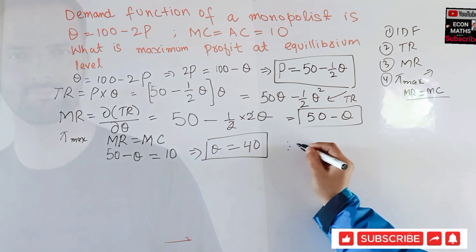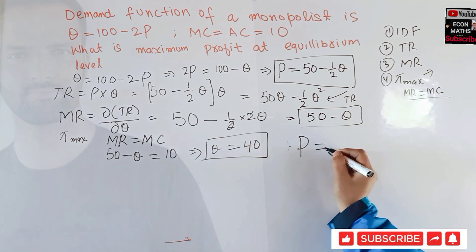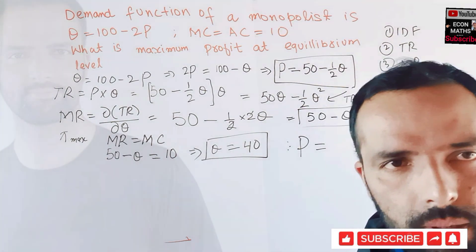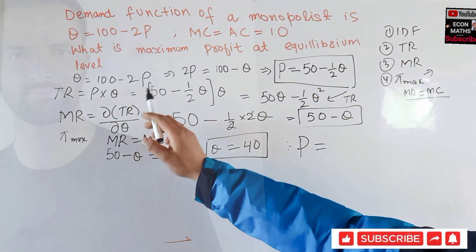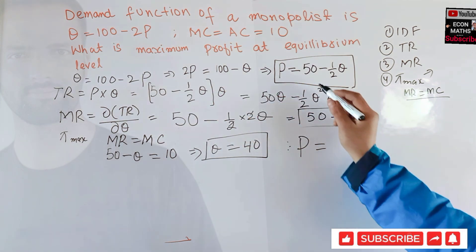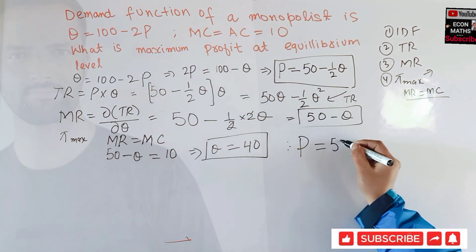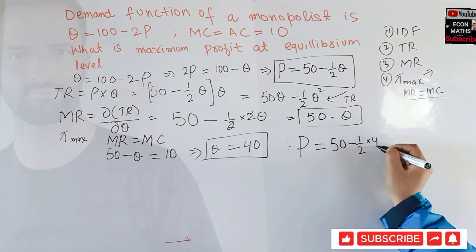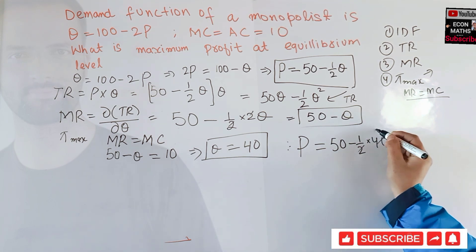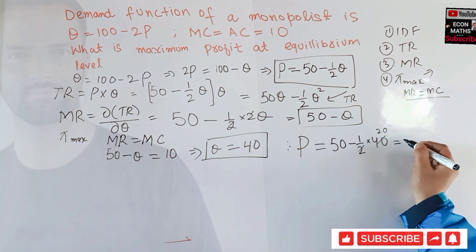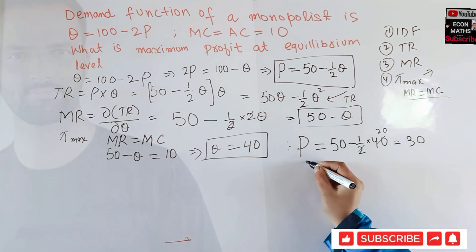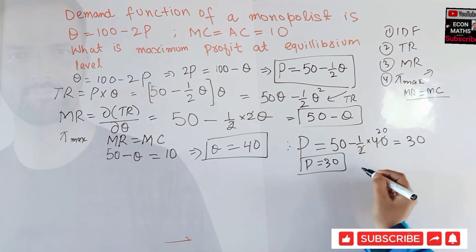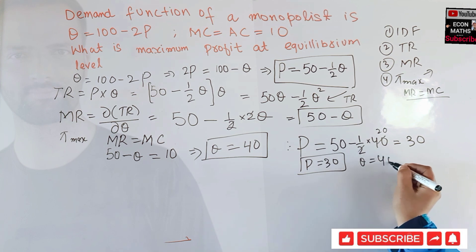Now we find the profit maximizing level of price. We substitute Q equals 40 into our inverse demand function: P equals 50 minus one-half of 40. This gives us 50 minus 20, which equals 30. So the equilibrium level of price is 30, and the equilibrium level of quantity is 40.